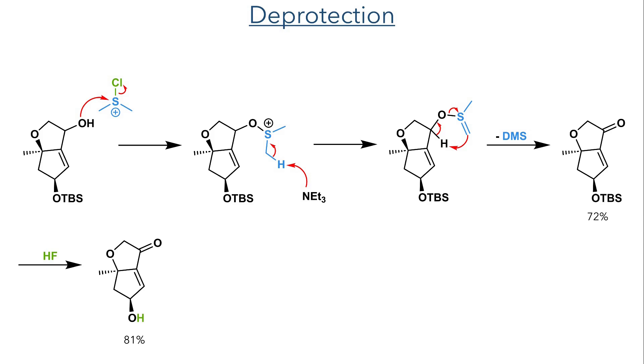This product was then reacted with hydrofluoric acid to deprotect the TBS group and complete the synthesis of fragment 1 in an 81% yield.